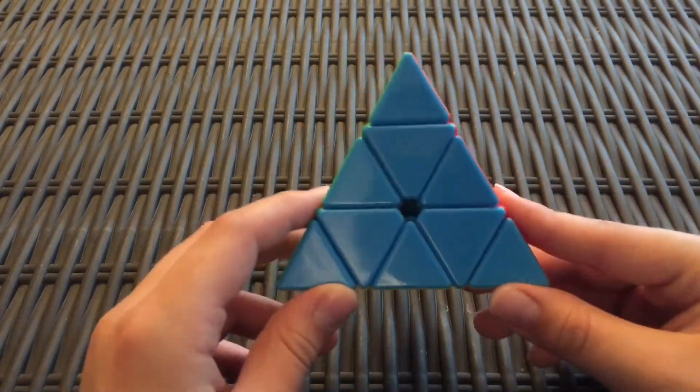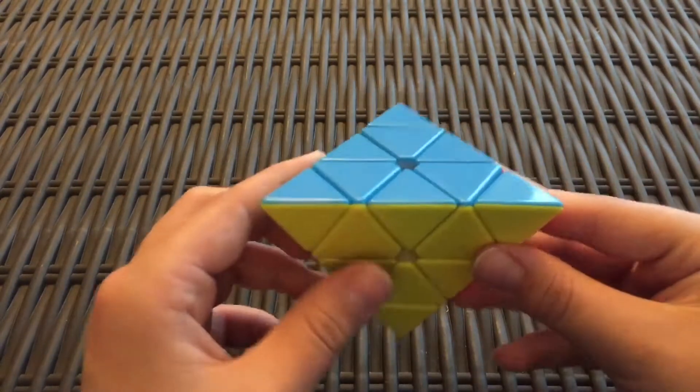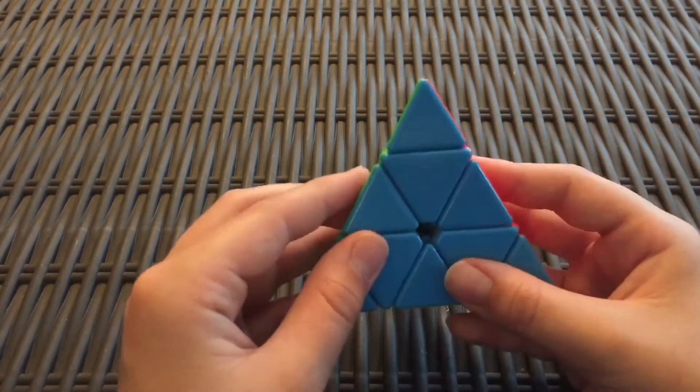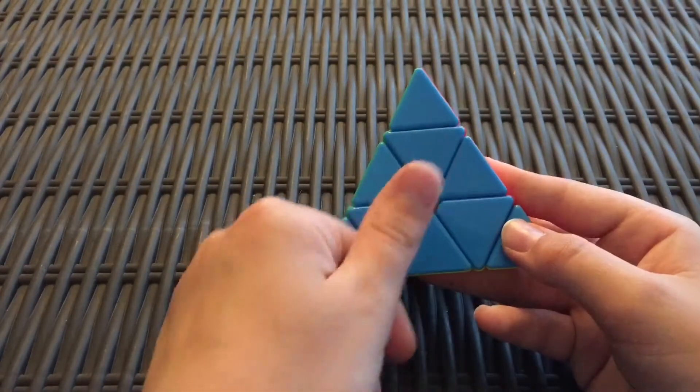First of all, when you're doing Pyraminx, you need to have a face turned toward you, not an edge, not a corner. Hold it so that one of the corners is on the top and a face is facing you.